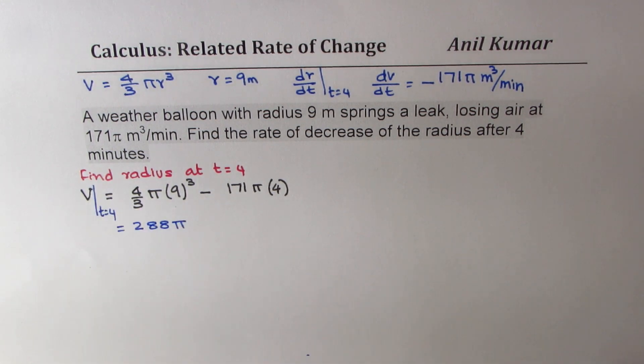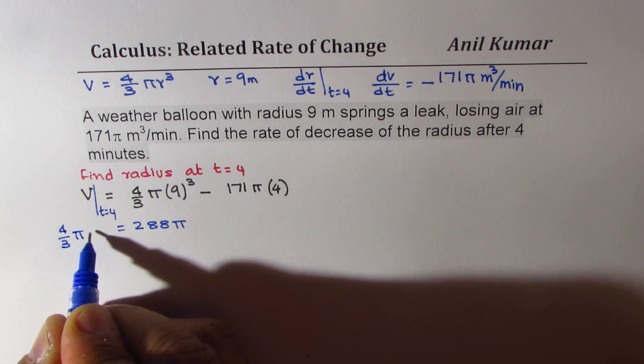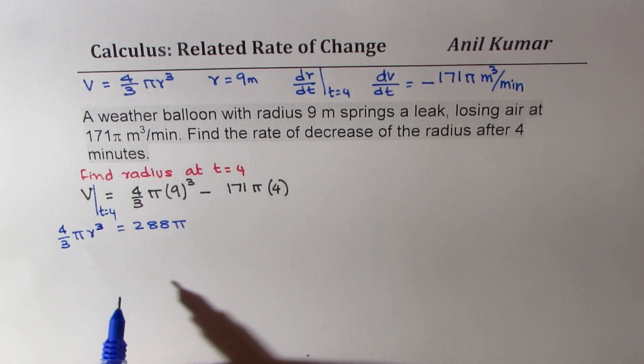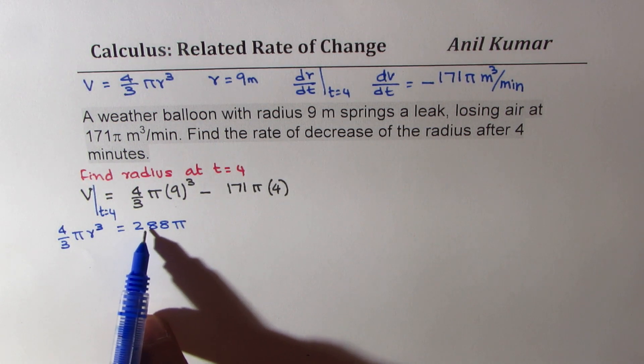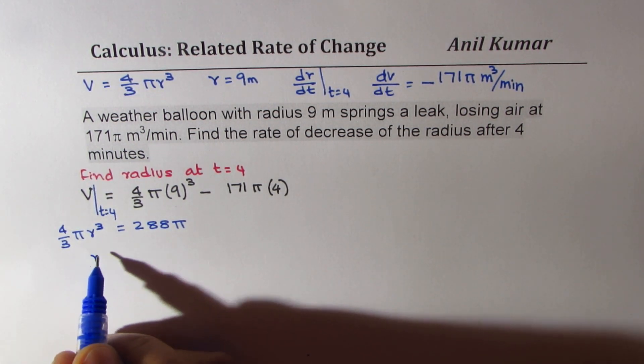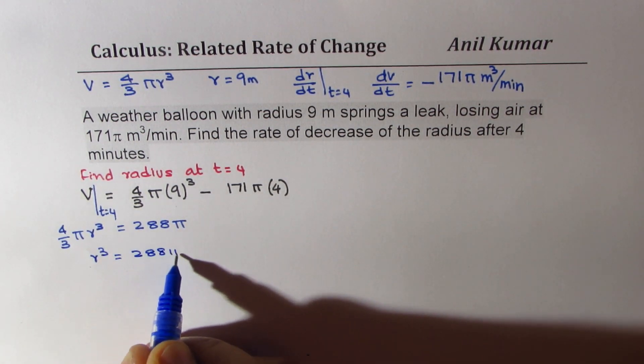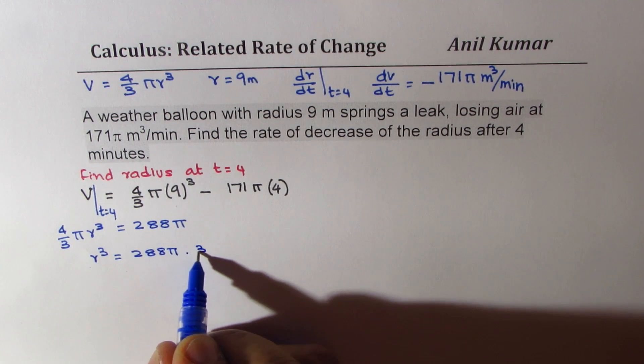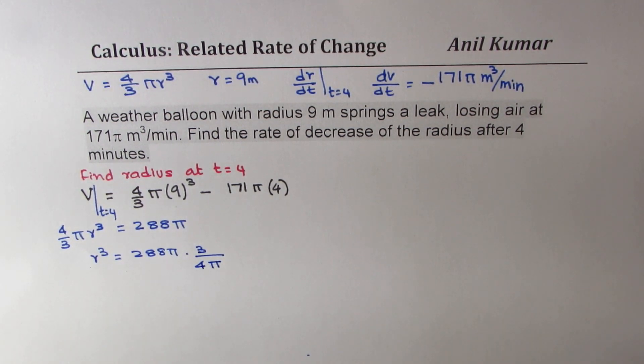So the volume after t = 4 minutes is 288π. Now if that is the volume, what is the radius? We can write volume as 4/3 πr³. Since the volume is 4/3 πr³ and actual value is 288π, what is r? So we can find r³ as 288π times 3 over 4π.